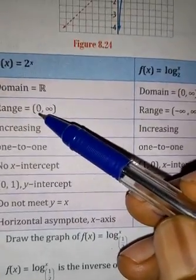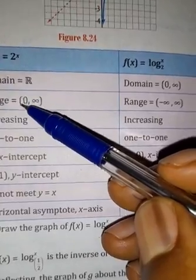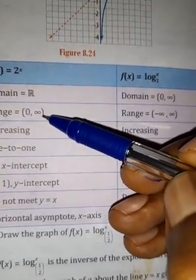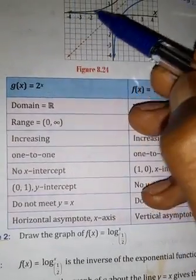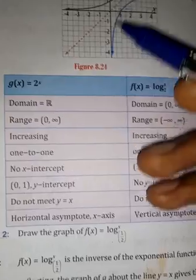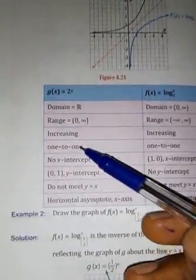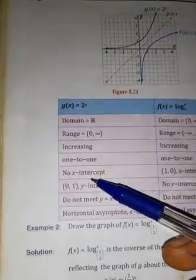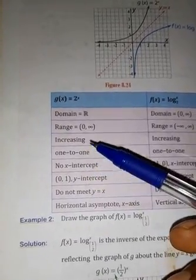As you can see here, zero is excluded — zero is not included. It is also a one-to-one function. The type of function here is a one-to-one function.